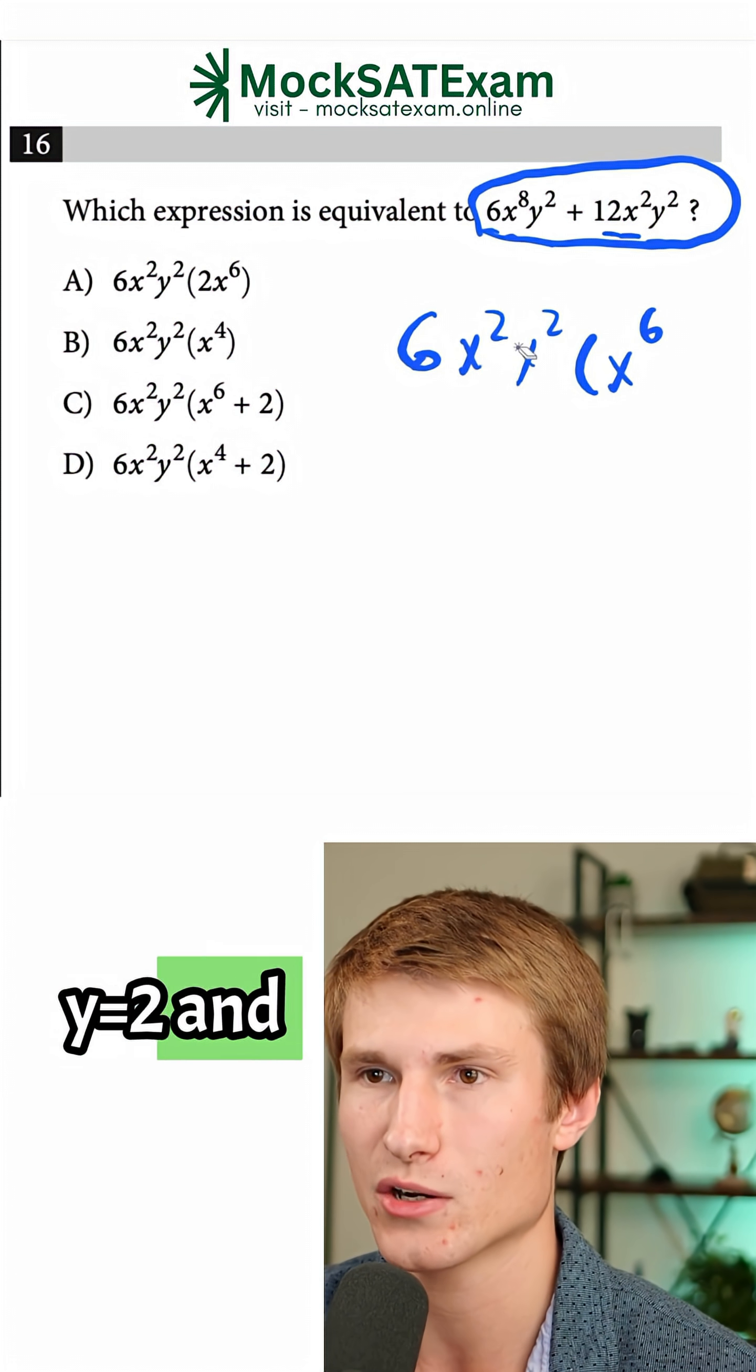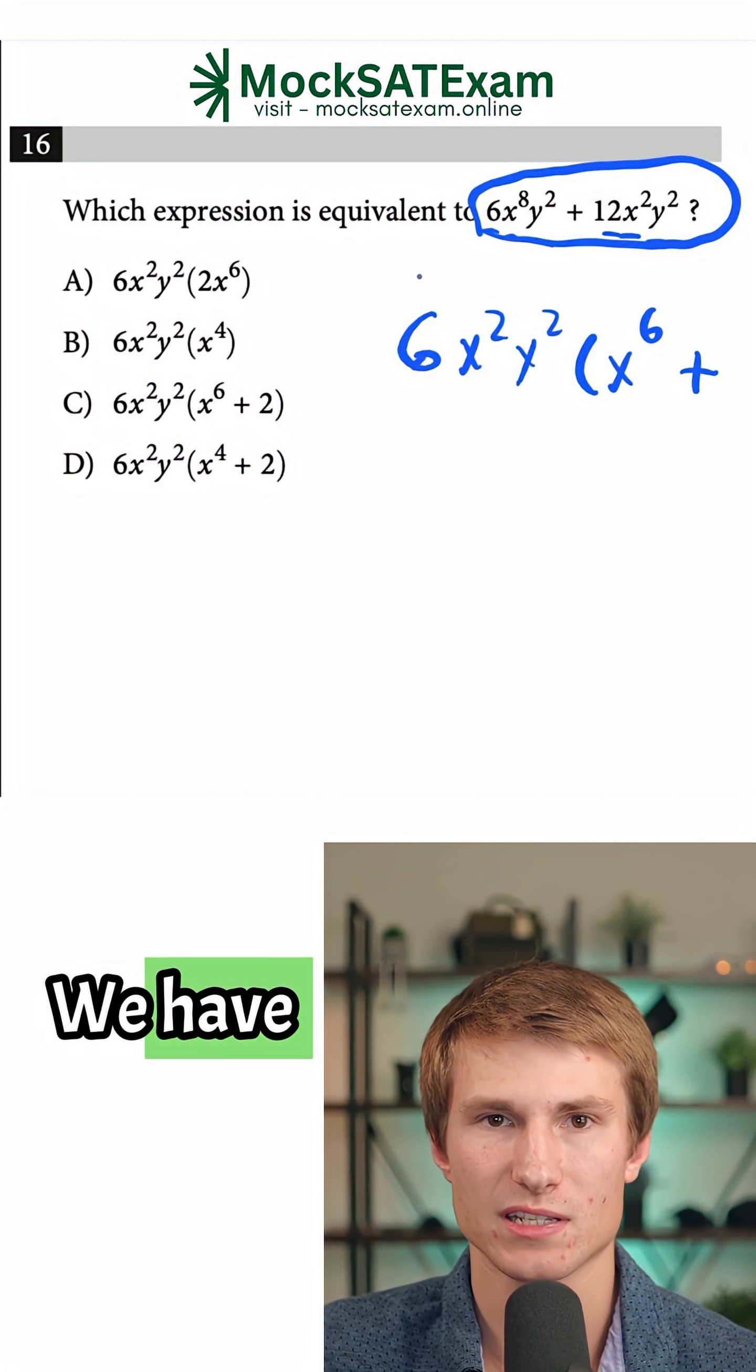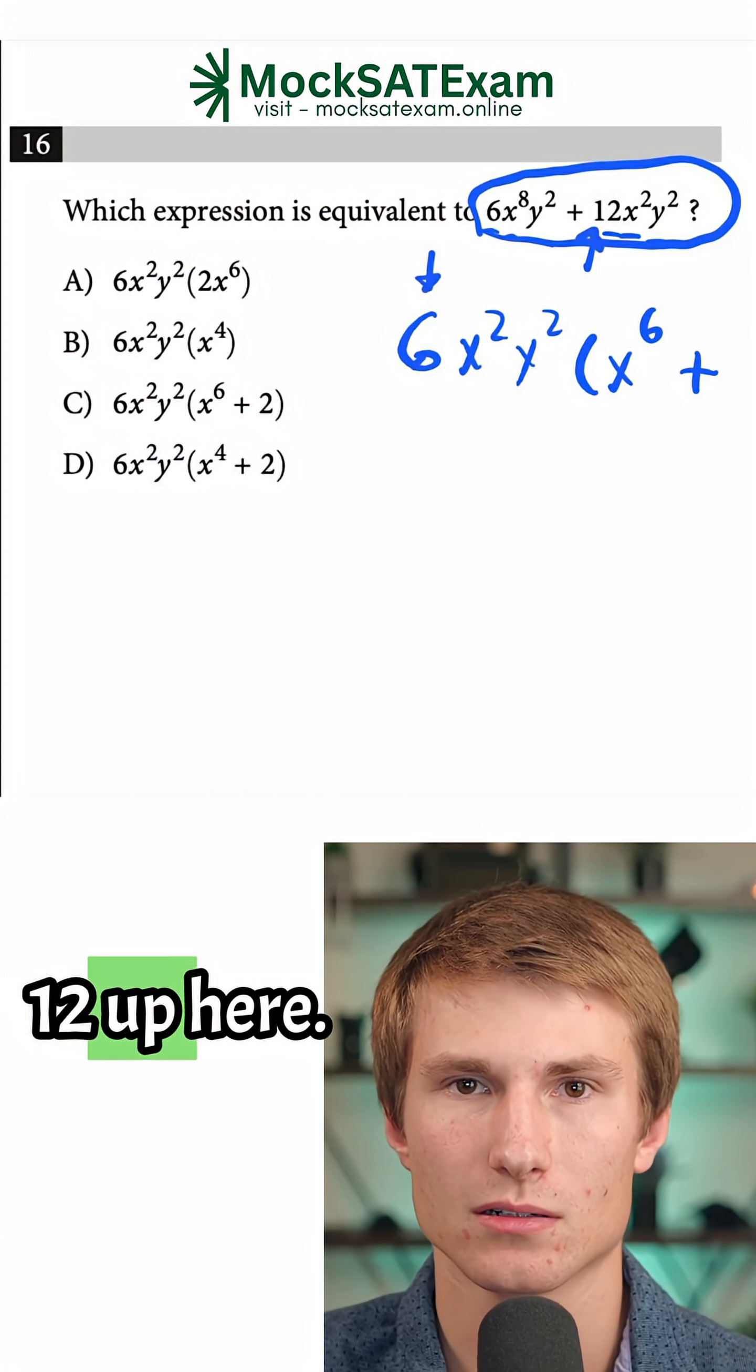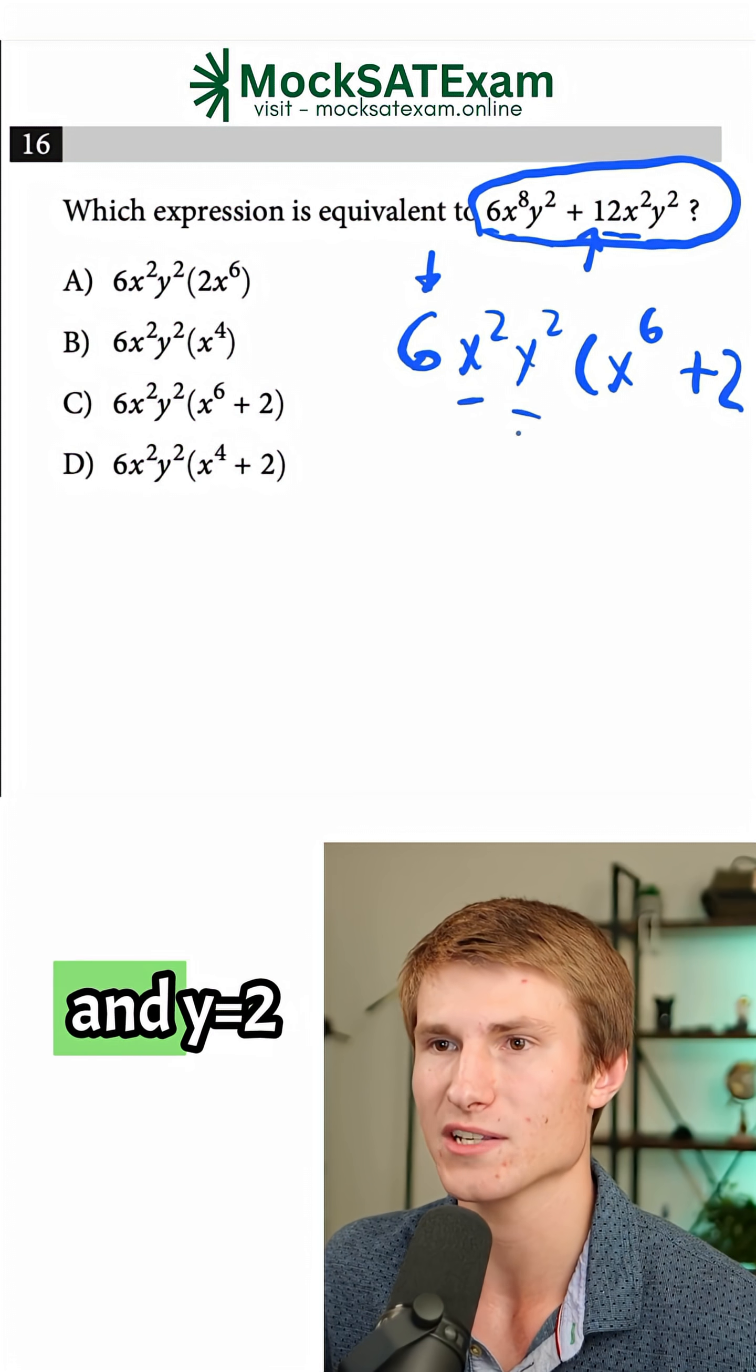We're still going to have that y^2, we have that 6 out front. So now we have our first term. Now we know that we also have to have another term because we have 6 here, but we have 12 up here. So to get to that 12, we're going to have to add 2, and we still have x^2 and y^2 here as well.